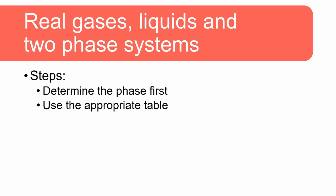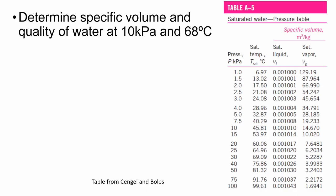The first thing you need to do is always determine the phase first, which will then help you use the appropriate table. In this question, we need to determine the specific volume and quality of water at 10 kilopascal and 68 degrees Celsius. We first need to determine the phase in order to know which table to use. Because the values of temperature and pressure are given, we can use the pressure-temperature diagram to determine the phase.